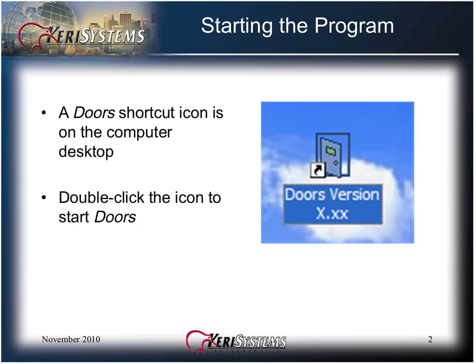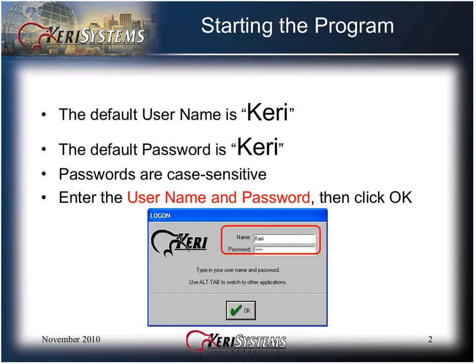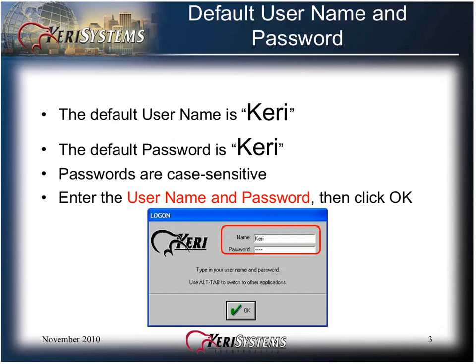A DOORS shortcut icon is placed on the computer desktop. Double-click the icon to start DOORS. You must log on to perform program functions. Each operator should have a unique username and password. The default username and password is CaryCary. Note the uppercase C in the password field — passwords are case sensitive. Enter the username and password in the respective fields, and then click OK.